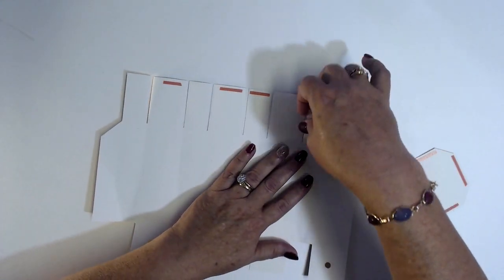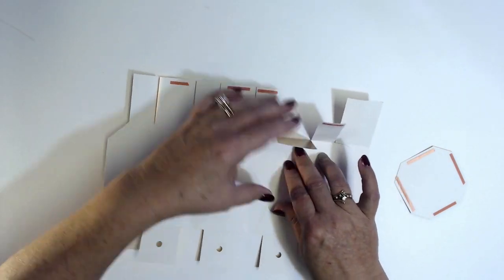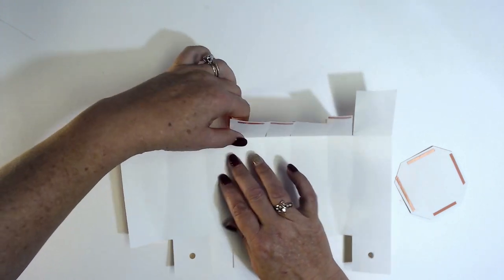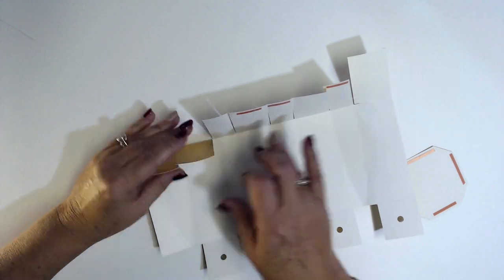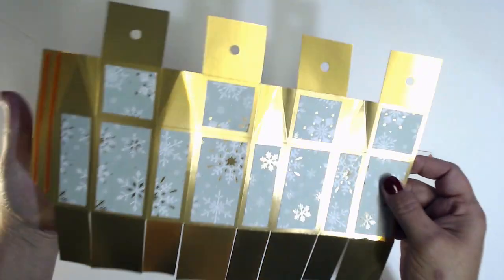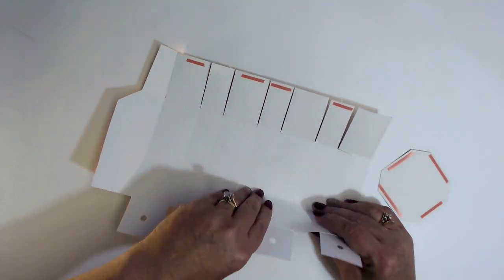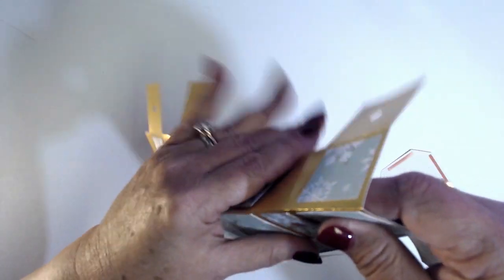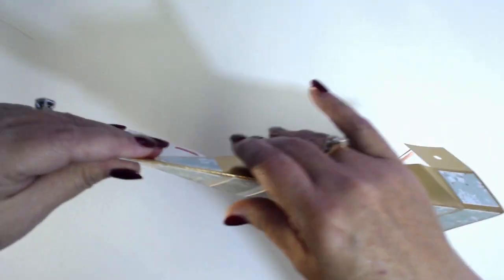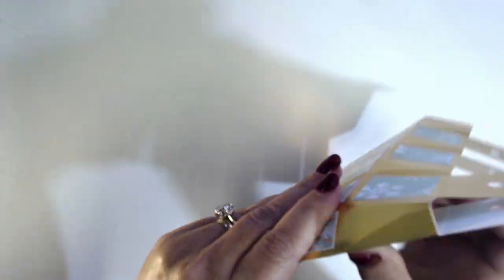And then we're going to flip the box over and we're going to do the same thing with the bottom. There's one crease that goes all the way across here, we're going to fold that in just like that. And then we're going to do each of the eight sides.